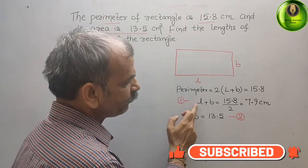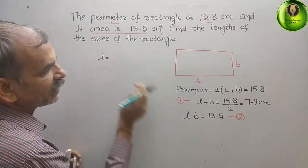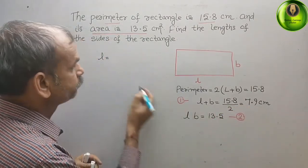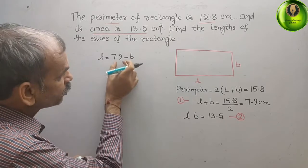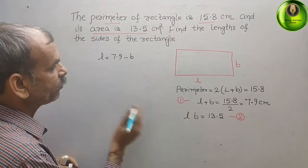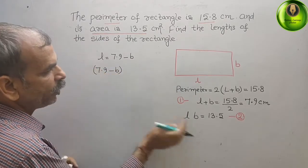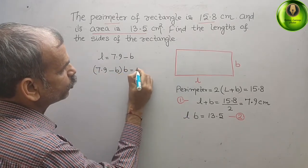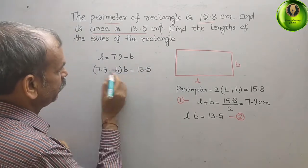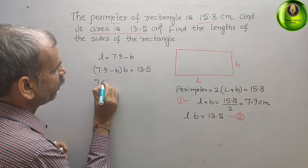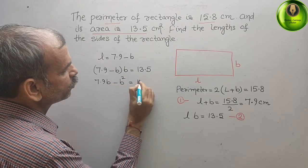Now, from first equation, if you take L, what is that? L is equal to 7.9 minus B. Now, substitute this value here. We will get what? 7.9 minus B into B. That is equal to 13.5. Now, multiply it. We will get 7.9B minus B square. That is equal to 13.5.